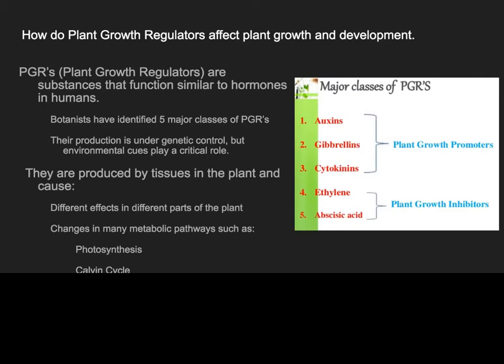PGRs are produced by tissues in the plant, and they can cause different effects in different parts of the plant — they might cause flowers to sprout, fruit to grow, leaves to fall off, or leaves to begin photosynthesis. Some of the major changes that can occur in metabolic pathways include photosynthesis — how plants make food — and the Calvin cycle, which is part of that photosynthetic process. We'll talk about three promoters and two inhibitors.